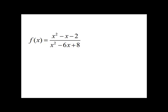We can factor both the numerator and denominator, and thus rewrite f(x) as (x - 2)(x + 1) over (x - 2)(x - 4).